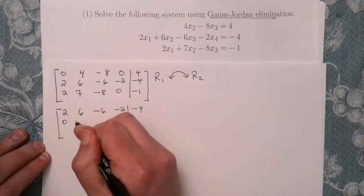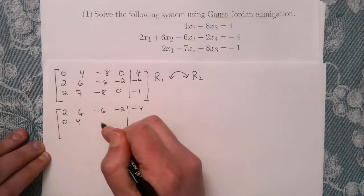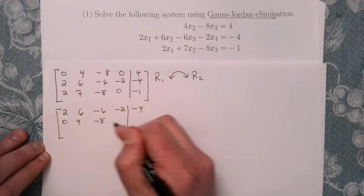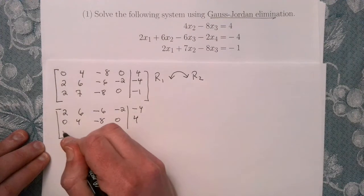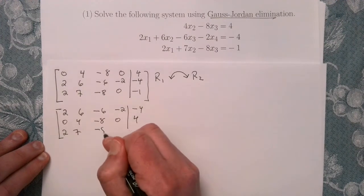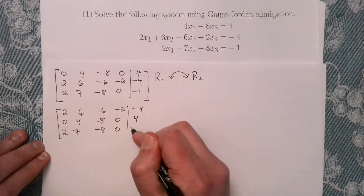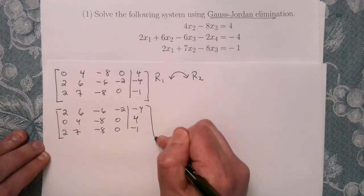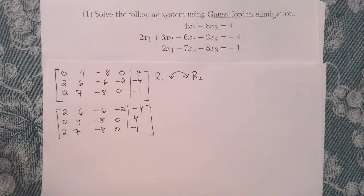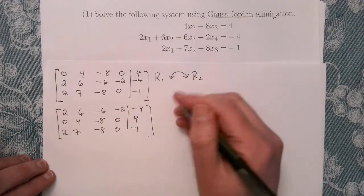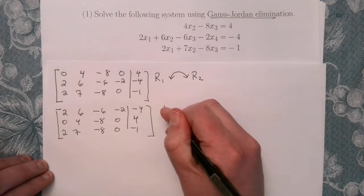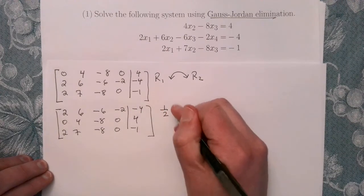Then row two becomes 0, 4, minus 8, 0, 4. And row three is 2, 7, minus 8, 0, minus 1. Let's go ahead and take one half of the first row to get our leading one.